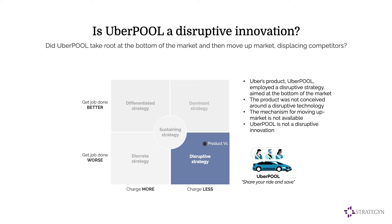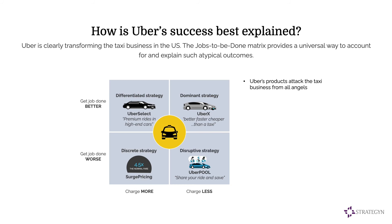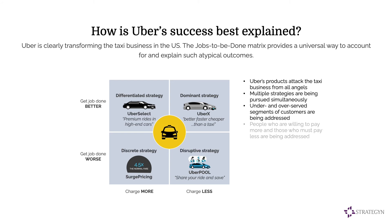How is Uber's success best explained? It's best explained by understanding that they are pursuing the market from all angles, attacking the taxi business from each angle. They're pursuing multiple strategies at the same time — targeting under- and over-served segments with differentiated strategies, disruptive strategies, and dominant strategies. They're even effectively deploying a discrete strategy, charging people more money for more service when demand does not meet supply. Non-consumption is also being addressed with the less expensive Uber Pool. By analyzing a market through this lens, we can think about disruptive innovations a bit differently.